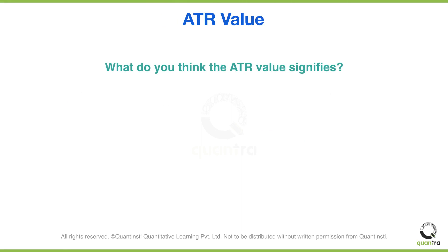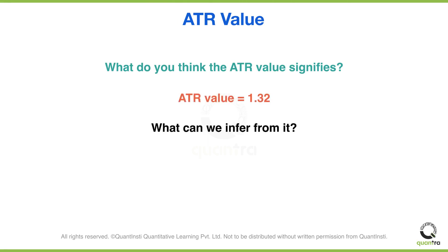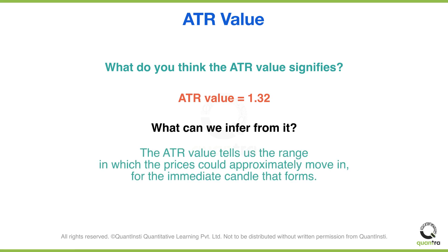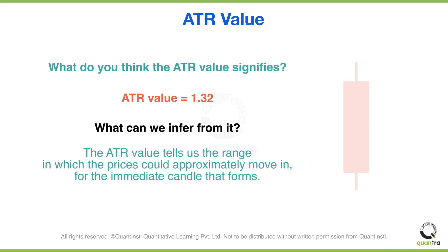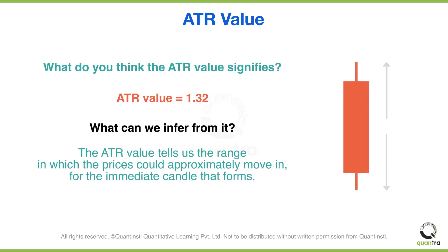What do you think the ATR value signifies? For example, here we have the ATR value as 1.32. What can we imply from this number? The ATR value simply tells us the range in which the prices could move for the immediate candle that forms. So in this case, we can say that the prices of Colgate Palmolive are expected to move within a range of 1.32 points from the current close. However, based on this value, we cannot determine the direction in which the prices may move.